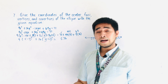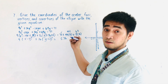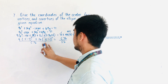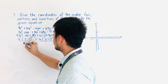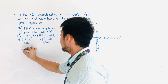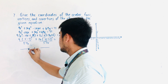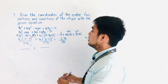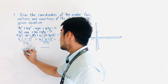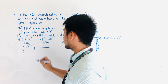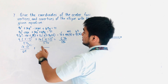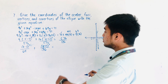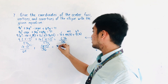Always remember that the right side of an ellipse equation is always equal to 1. Therefore, we need to divide both sides by 576. Dividing: 576 ÷ 9 = 64, so the first term becomes (x - 7)² / 64. And 576 ÷ 16 = 36, so the second term becomes (y + 2)² / 36. The right side is 576 ÷ 576 = 1.